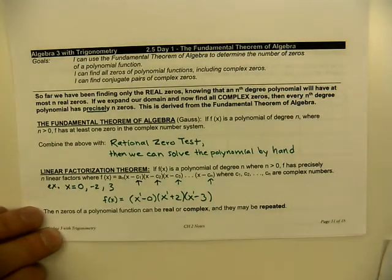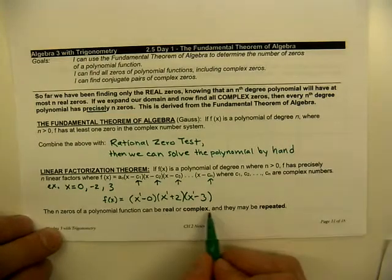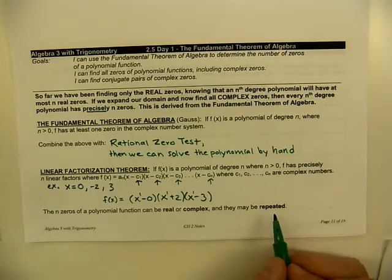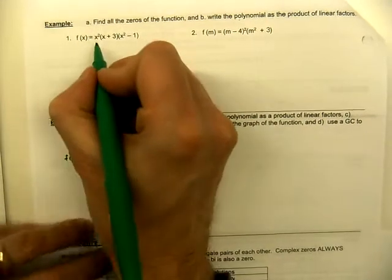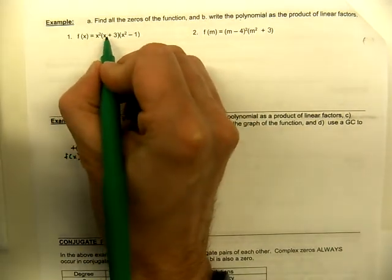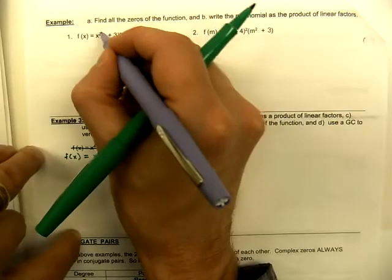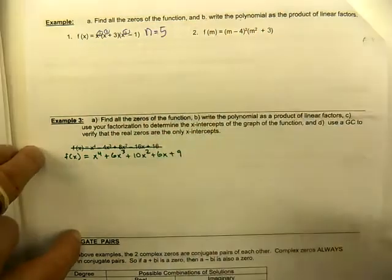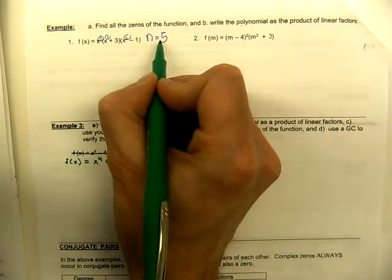So we'll be formatting our answers in this way. When solving for zeros, the answers can be real numbers, complex, or even repeated — we can have a multiplicity. For example one: find all zeros of the function and write the polynomial as a product of linear factors. Notice this is already factored: x squared is being multiplied by x plus three, which is being multiplied by x squared minus one. Looking at the exponents — two plus one plus two — this is a fifth degree polynomial, so we should find five answers.